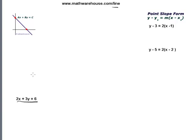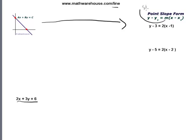2x plus 3y equals 6, which is in standard form. On the top left here is a general idea of what standard form looks like: ax plus by equals c. And then to be able to convert that into point slope form, which in general is y minus y1 equals m times x minus x1, where m is the slope, and x1 and y1 are any point on the line.